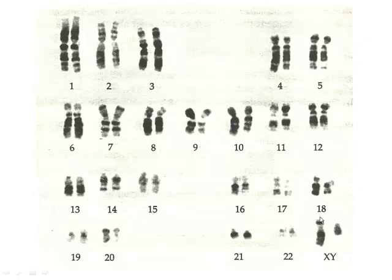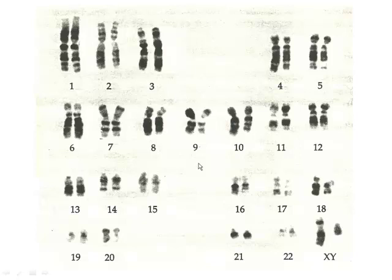One last review: are these duplicated or unduplicated? These are unduplicated — 46 unduplicated chromosomes in 23 pairs. These are 23 pairs of 46 duplicated chromosomes.